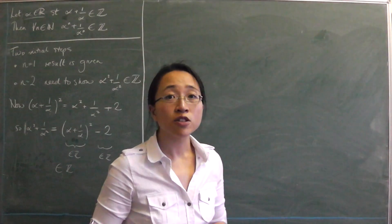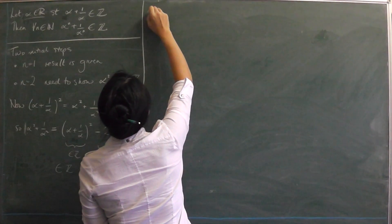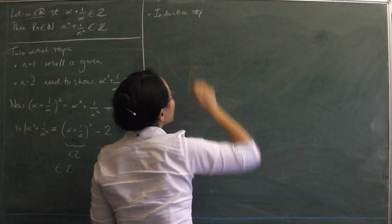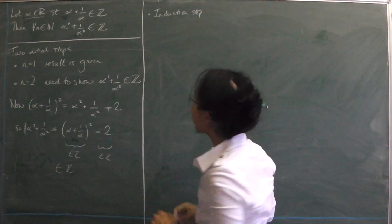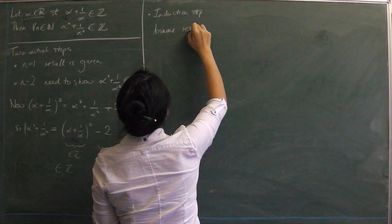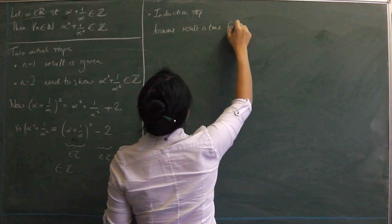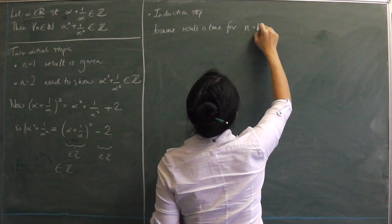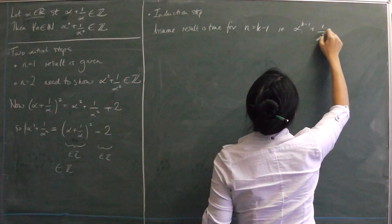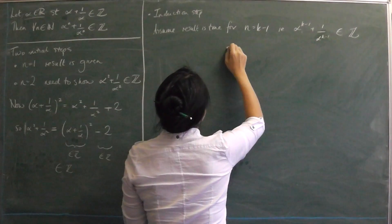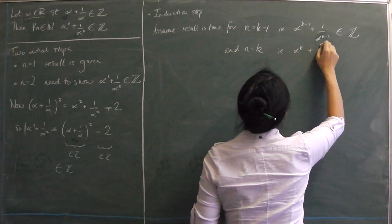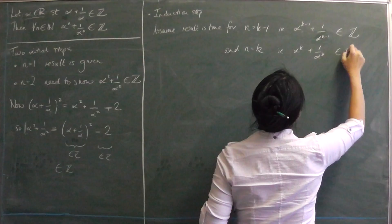So those are the n equals 1 and n equals 2 initial steps. Now let's do the induction step. We need to assume the result is true for k minus 1 and k. So we assume alpha to the k minus 1 plus 1 over alpha to the k minus 1 is an integer, and that alpha to the k plus 1 over alpha to the k is also an integer.